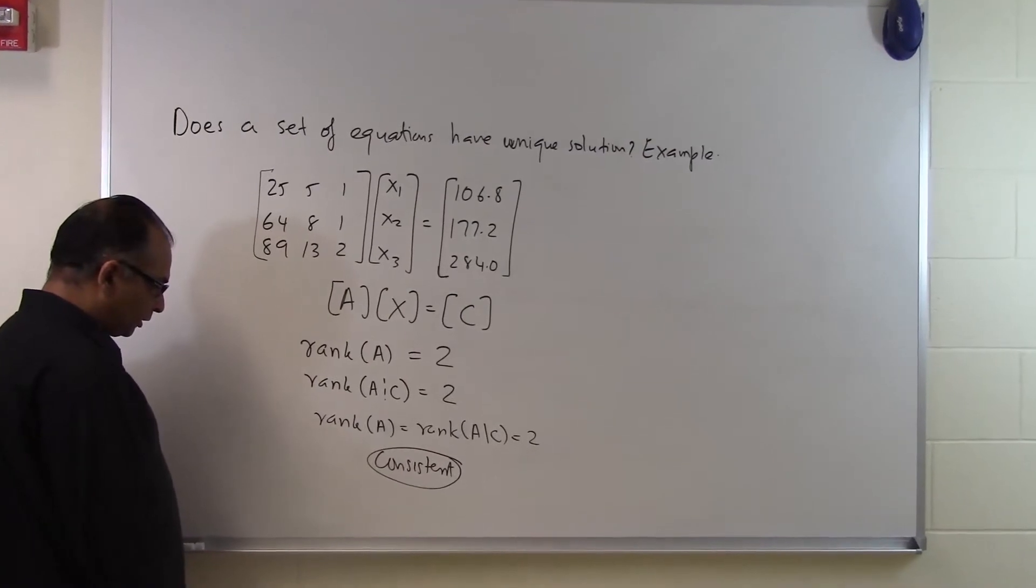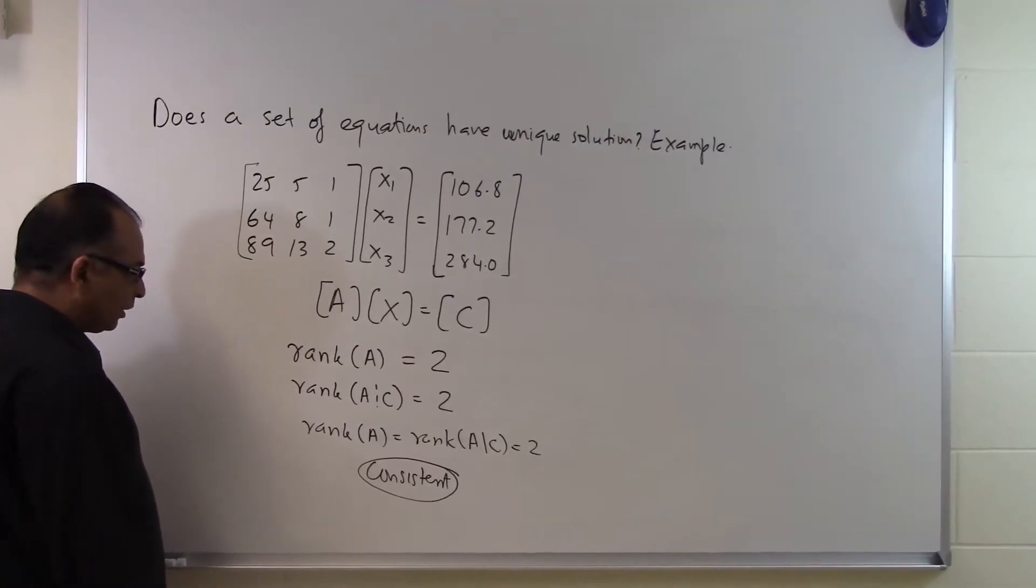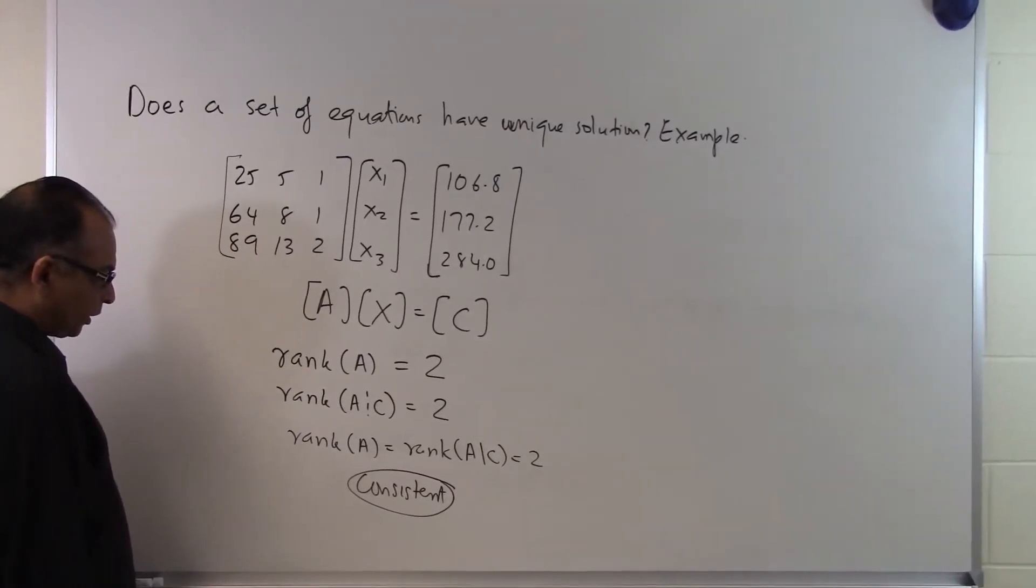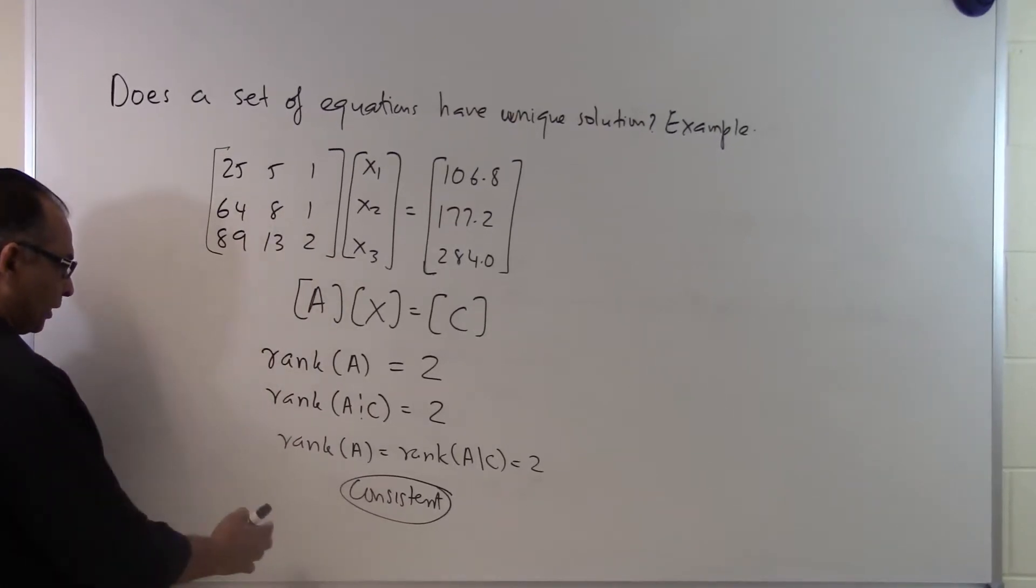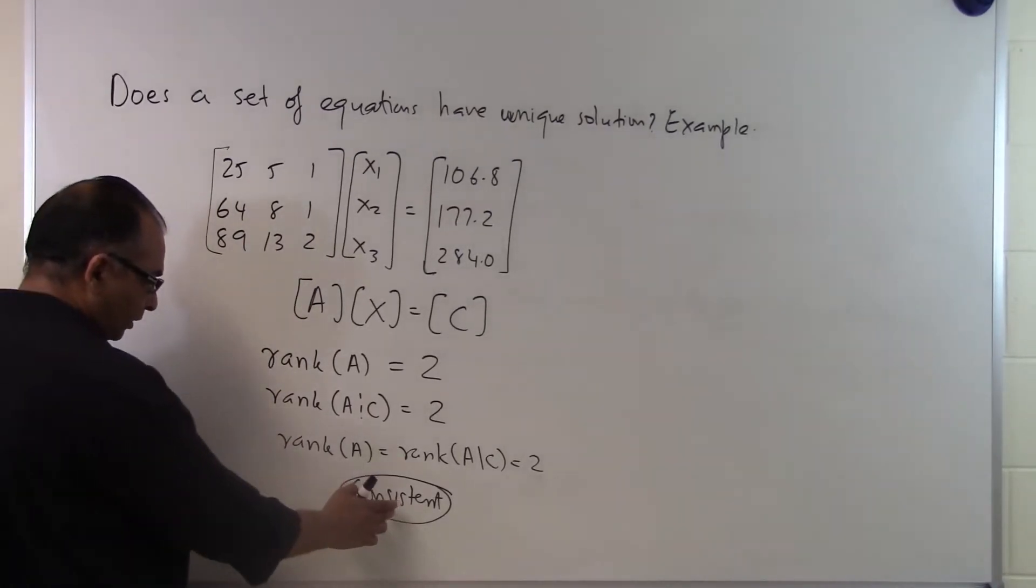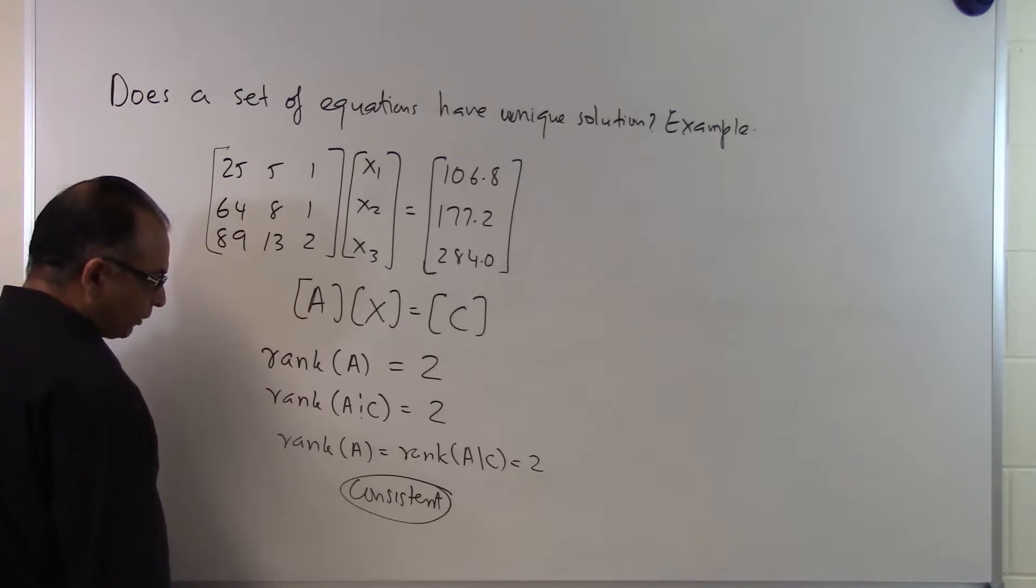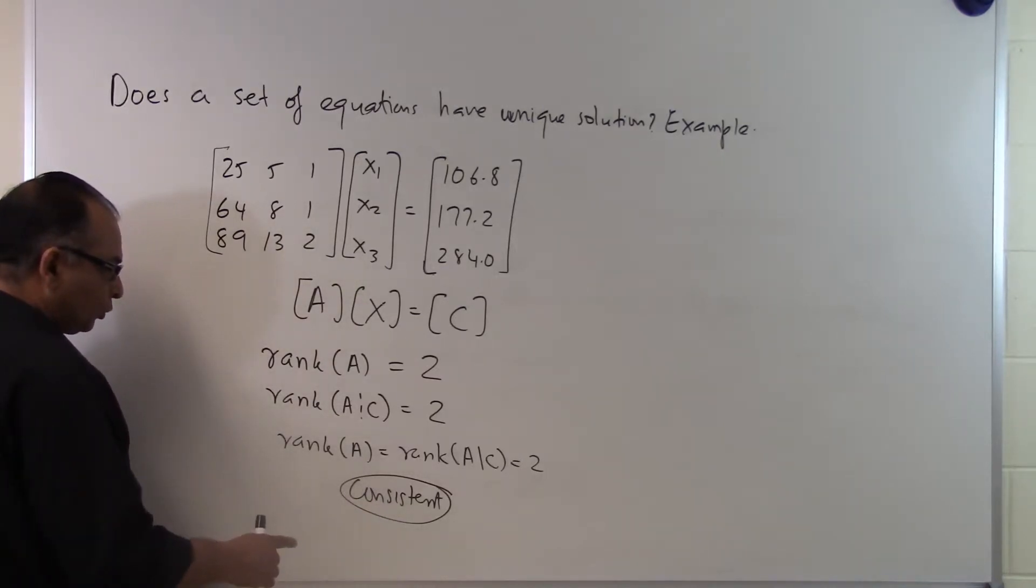Either the solutions are, the number of solutions is 1, is unique, or it is infinite. So we have to now make a decision based on this, what we have found now that it is a consistent system of equations. Do we have unique solutions or do we have infinite solutions?